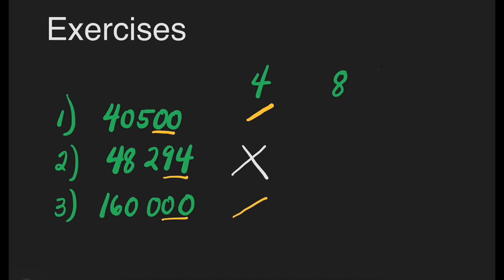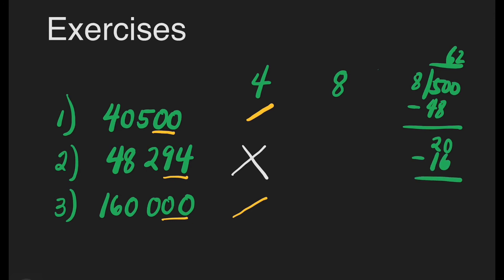For number 1, is 40,500 divisible by 8? We'll check the last 3 digits: 500 divided by 8. How many 8s are there in 50? That's 6. 6 times 8 is 48. Subtract: 50 minus 48 is 2. Bring down 0. How many 8s are there in 20? That's 2. 2 times 8 is 16. 20 minus 16 is 4 — we have a remainder of 4, making this number not divisible by 8.